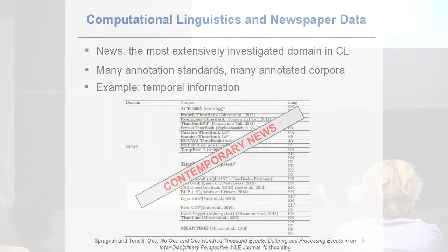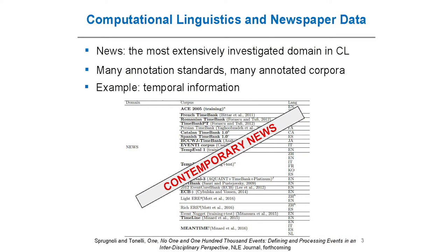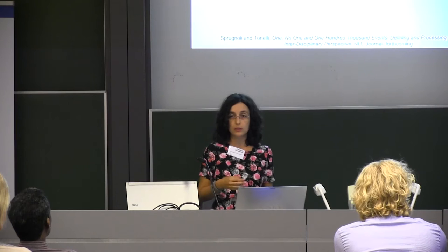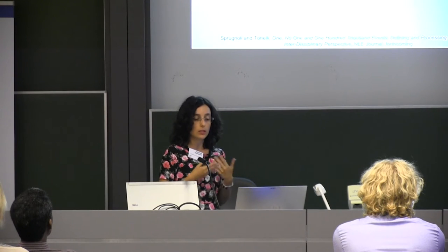The relationship between computational linguistics and newspapers has a very long history with roots at least in the 1990s. We can say that the most extensively investigated domain in computational linguistics is the one of news, and this means that many annotation standards have been developed taking into consideration the language of news reports — for example, the named entity annotation standard developed in the 90s in the Message Understanding Conference — and this led to the annotation of many corpora that include news.